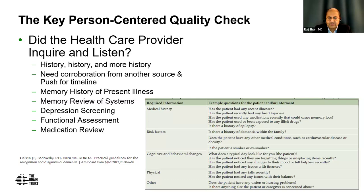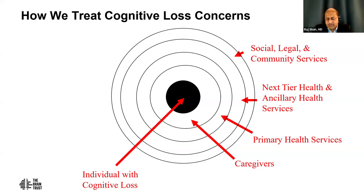The key is there's no blood test right now that can diagnose this, and no imaging study that does it for us. We have to depend on our capabilities as clinicians to listen and inquire, use a physical exam and some basic tests, make a working diagnosis, and then take a person-centered approach — with the person with cognitive loss and their caregivers at the center — to develop a care plan involving healthcare services, ancillary services, and community legal and social services.